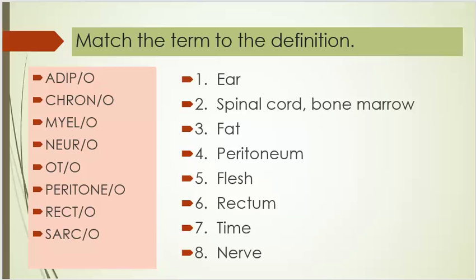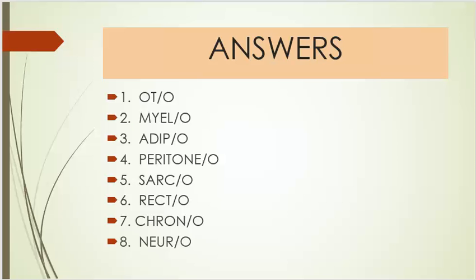The terms are: adipo, chrono, myelo, neuro, auto, peritoneo, recto, and sarco. Number one, ear. Number two, spinal cord or bone marrow. Number three, fat. Number four, peritoneum. Number five, flesh. Number six, rectum. Number seven, time. Number eight, nerve.